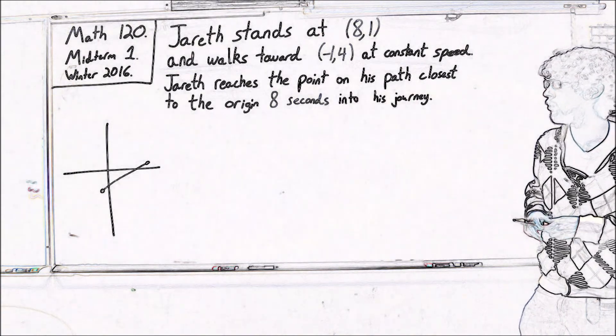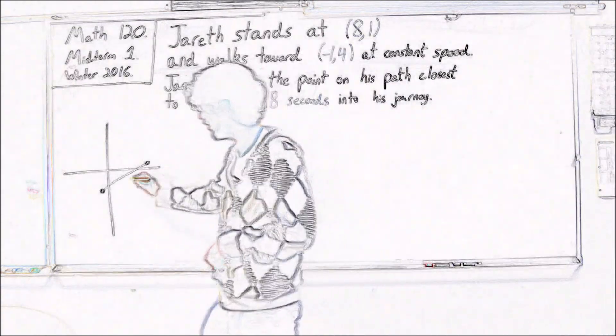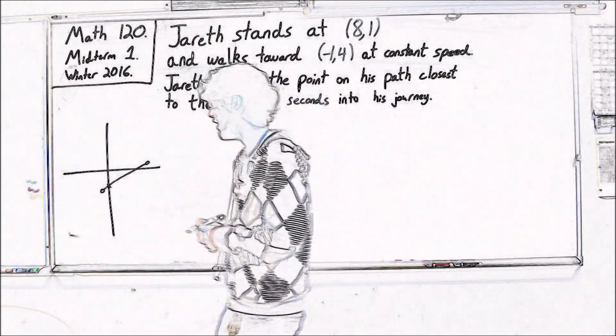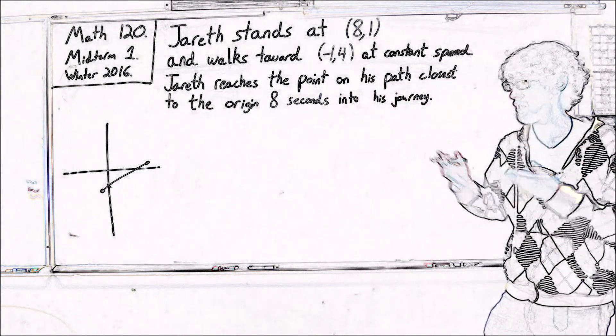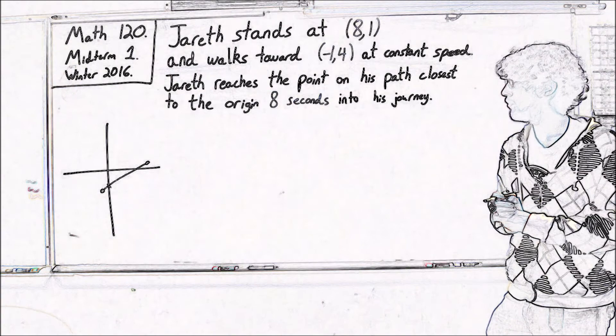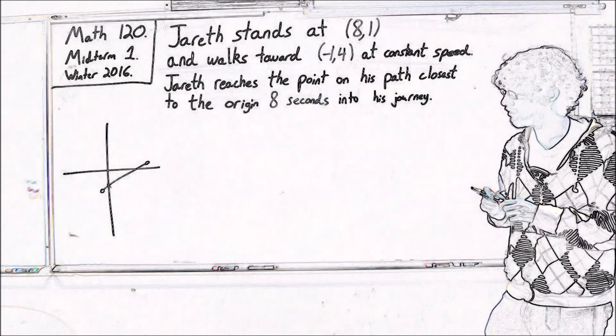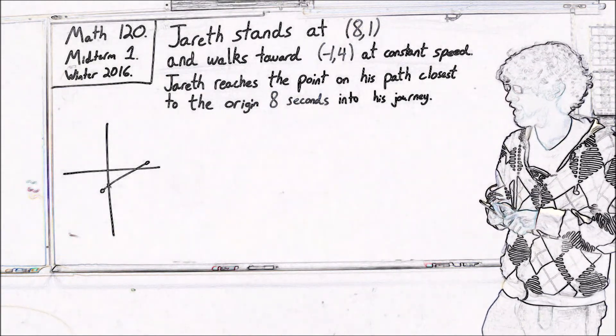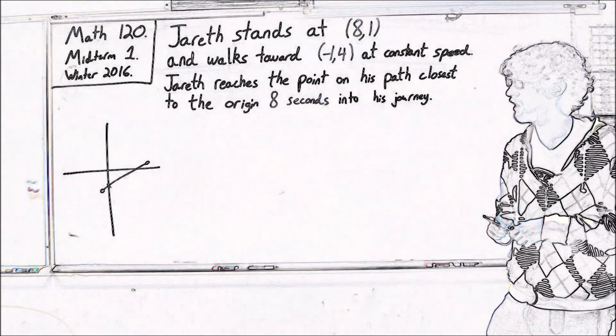I've seen a lot of students who say, oh well, this point here must be the one that's closest to the origin because that point has x equals 0. But if you think a little more carefully about it, that's not actually the case.